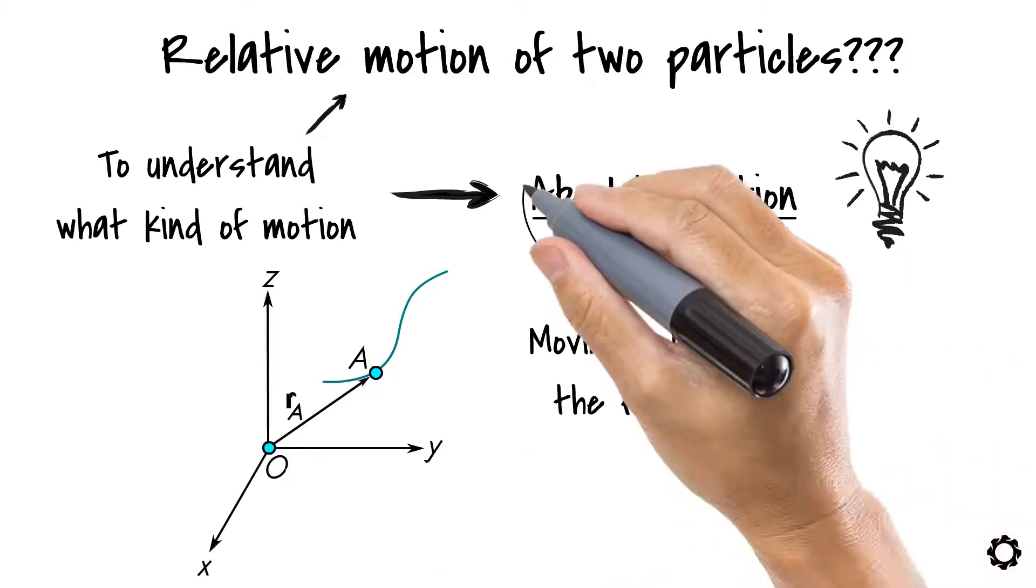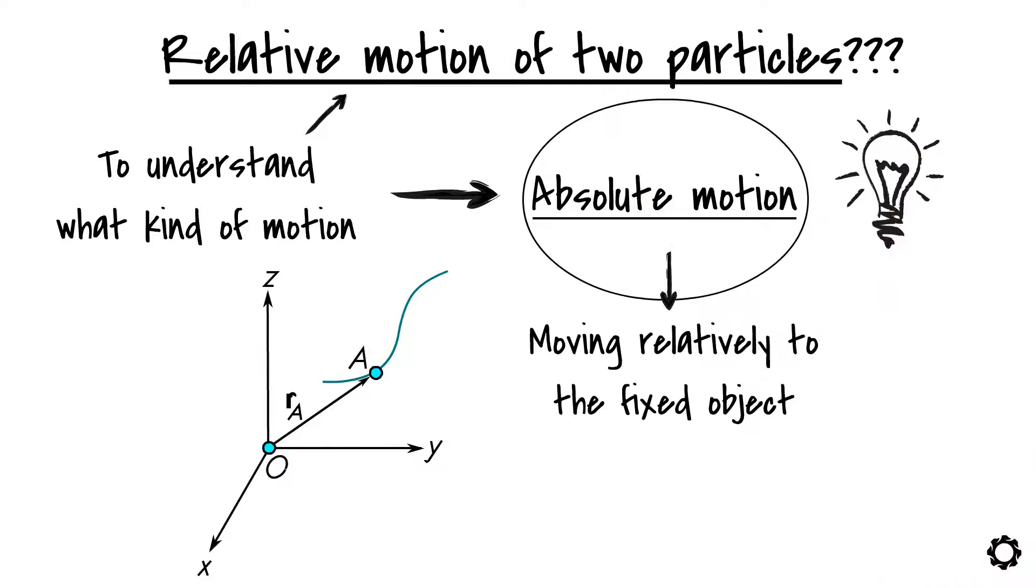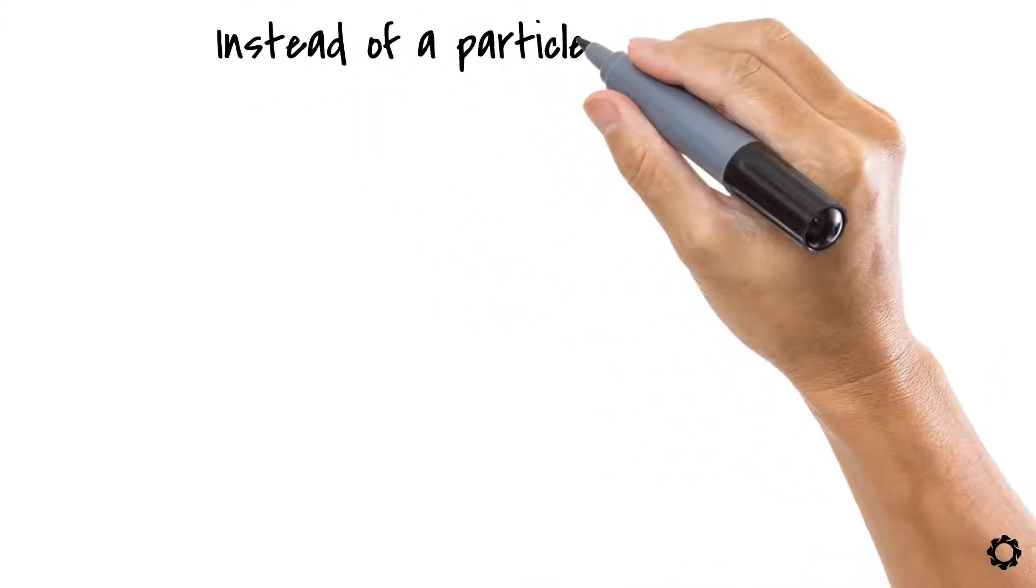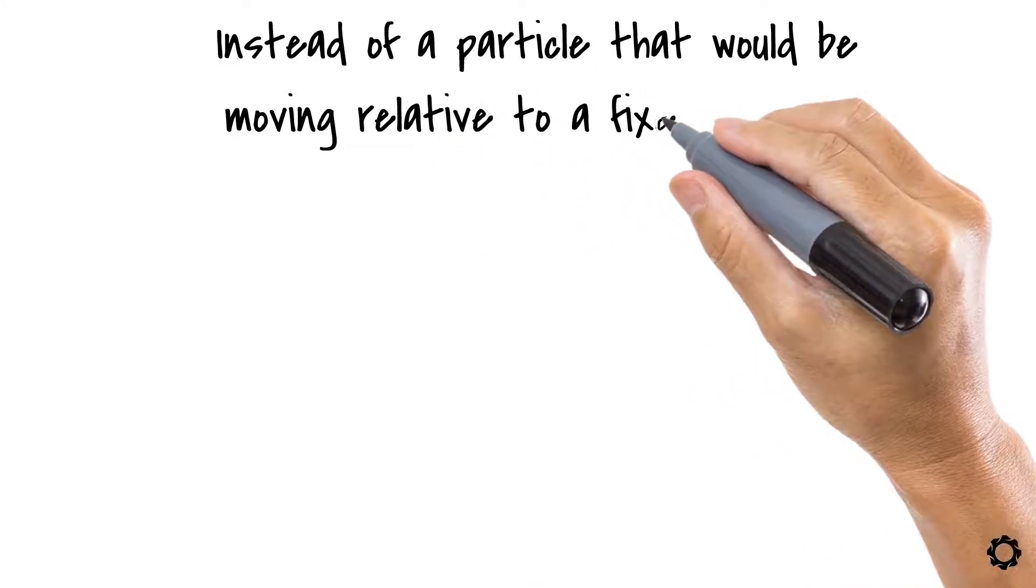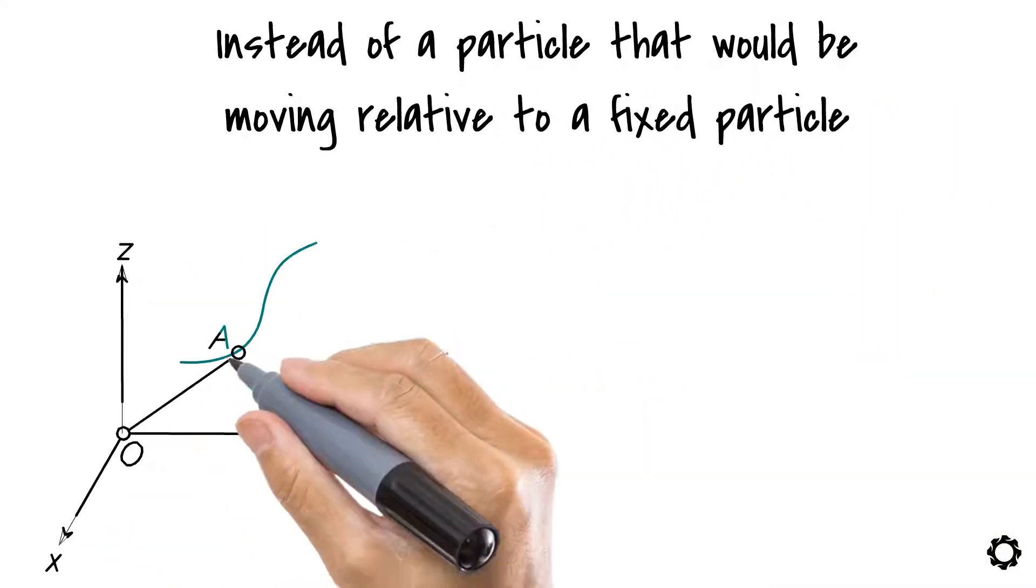How does this absolute motion then differ from the relative motion of two particles, you may ask? The simple answer is that instead of a particle that would be moving relative to a fixed particle, it moves relative to a particle which is also in some type of motion.